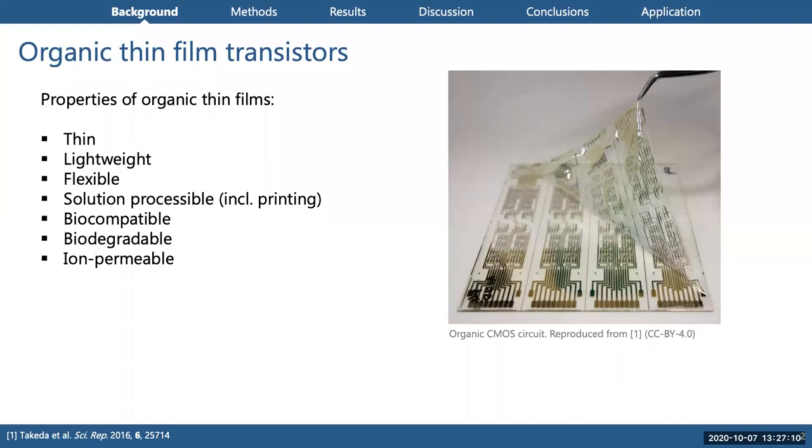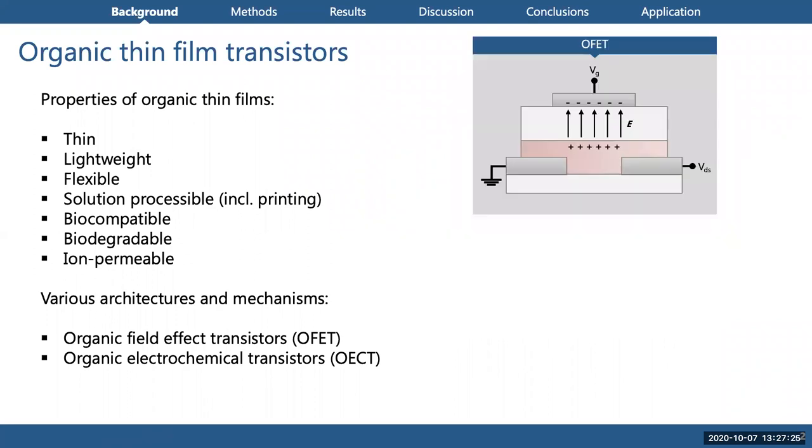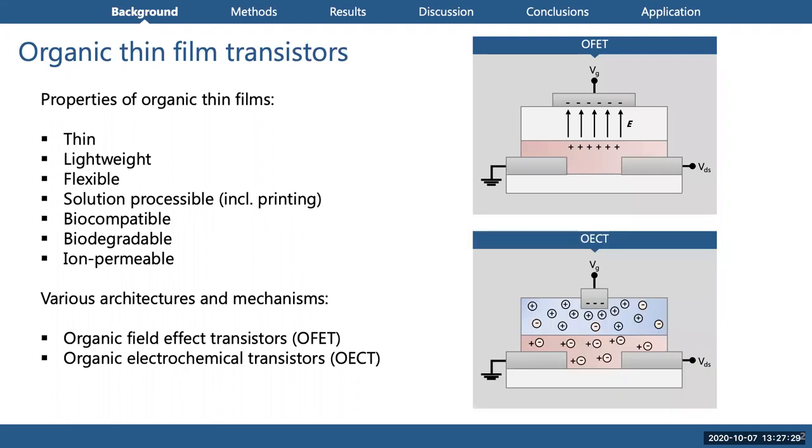These can all be very useful properties, particularly for electronics in sensing or biosensing applications where we want to work in close proximity to living tissue. So organic transistors have been widely studied for sensing applications, and these sensors use a variety of different transistor architectures, each with different operating mechanisms. These include, in very broad terms, field effect transistors and electrochemical transistors.